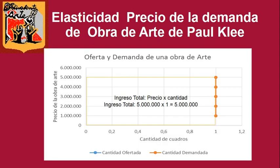Estamos graficando la oferta y la demanda de una obra de arte. En el eje X está la cantidad de cuadros —que es uno solo porque es una sola obra de arte— y en el eje Y está el precio. Primero se ofreció un millón, dos, tres, cuatro, cinco millones; a los cinco millones se vendió. Hay un rectángulo: la base por la altura es el ingreso total. Ingreso total es igual a precio por cantidad: cinco millones por un cuadro es cinco millones.